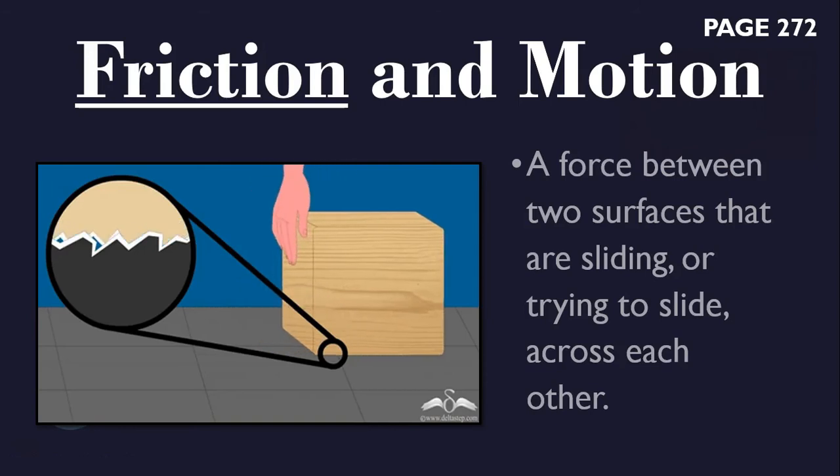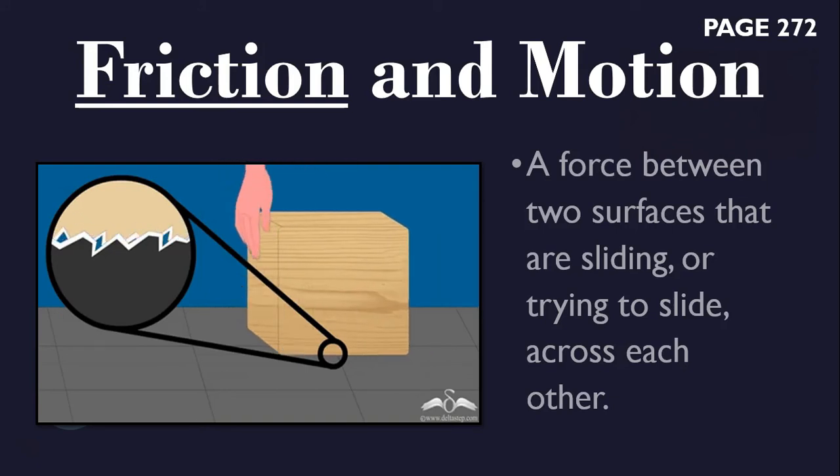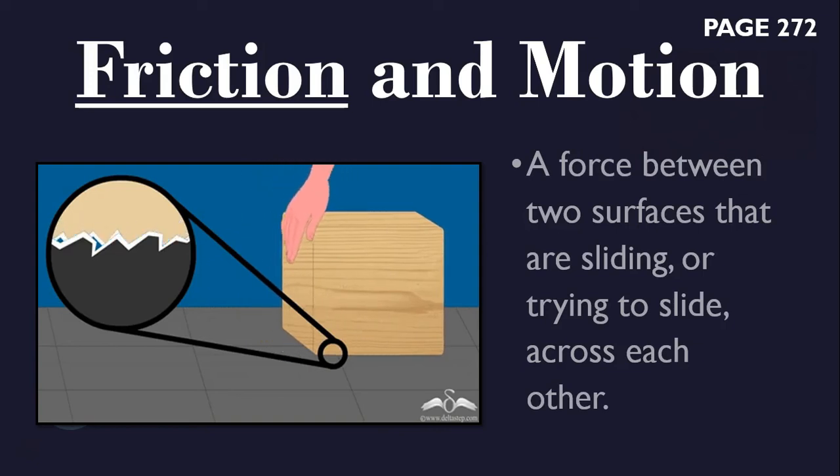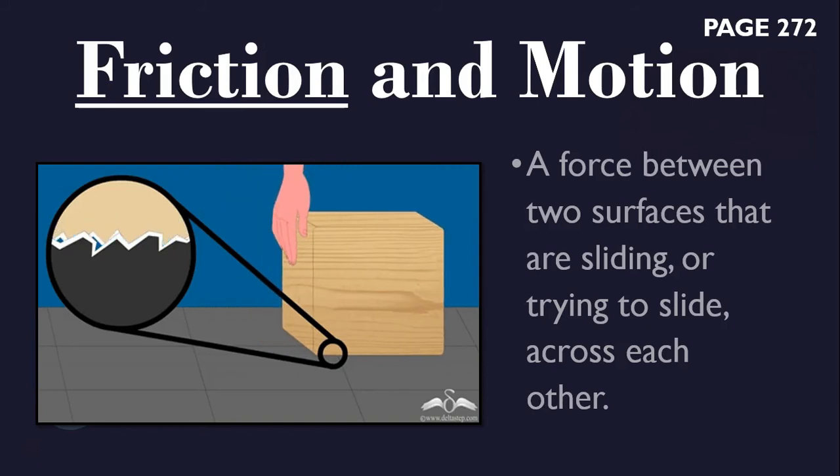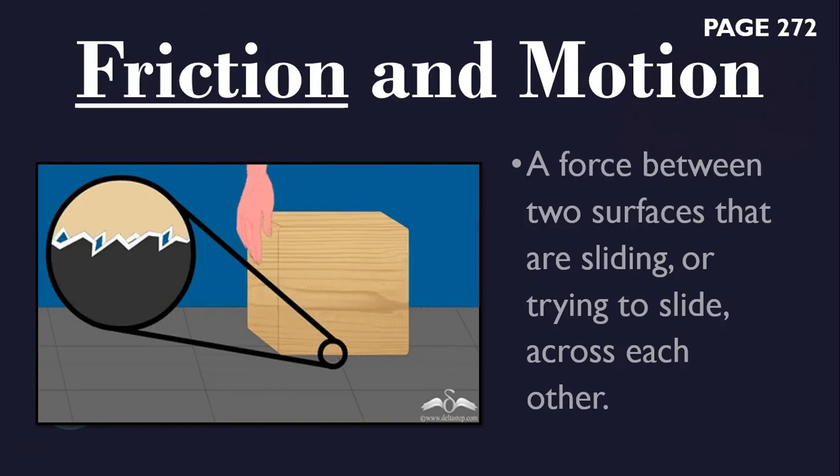No matter how smooth they appear, the rough edges lock together when the objects rub against each other, slowing down motion. Friction enables you to control movement. It prevents you from slipping when you walk. Smooth surfaces have less friction than rough surfaces. Water or any liquid smoothens rough surfaces by filling the grooves, reducing friction.